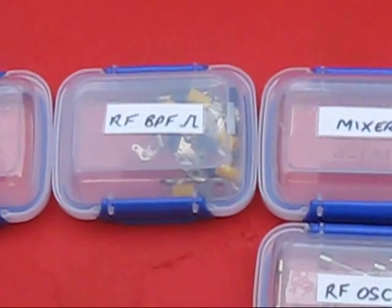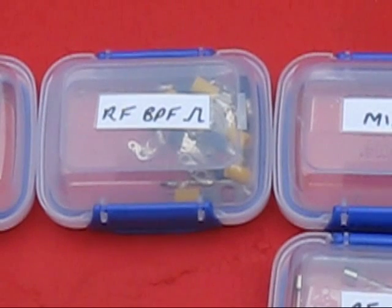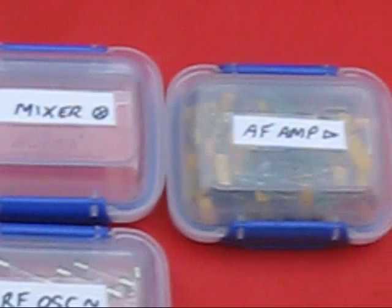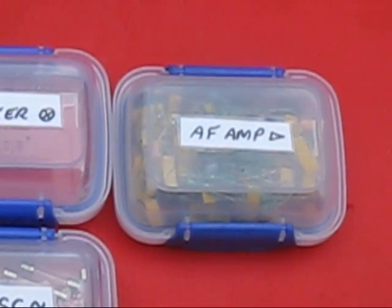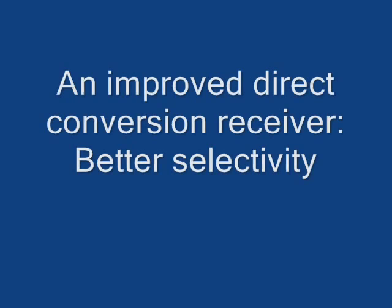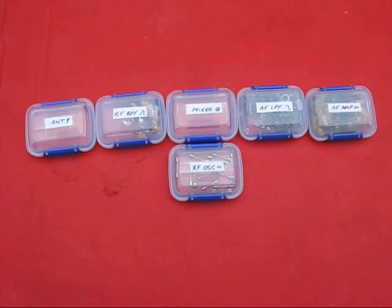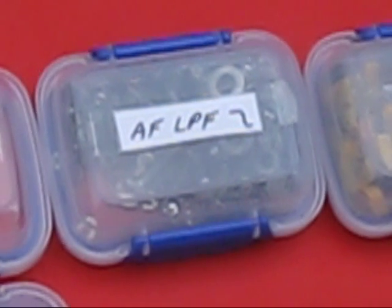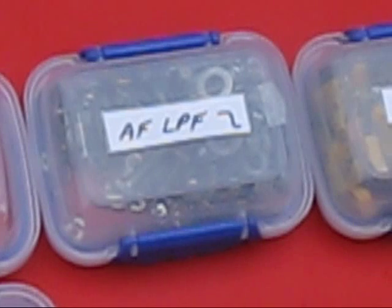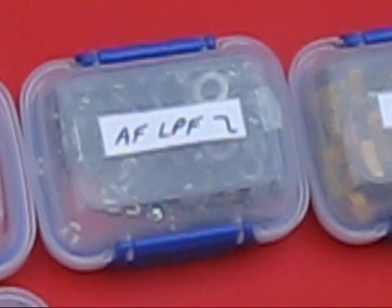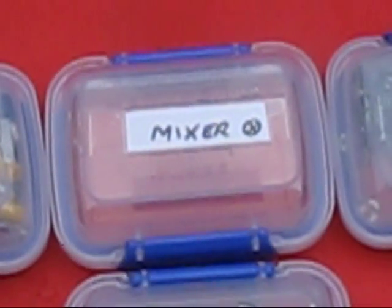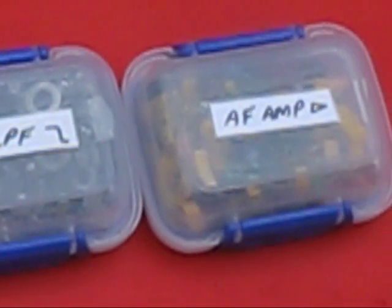Here I've added a bandpass filter. That provides selectivity and rejects unwanted signals from getting into the mixer. A straight direct conversion receiver is not very selective. The low-pass filter provides audio selectivity and improves the receiver's ability to reject nearby interfering signals. That fits between the mixer and the audio amplifier stage.